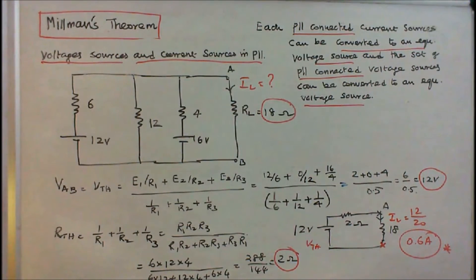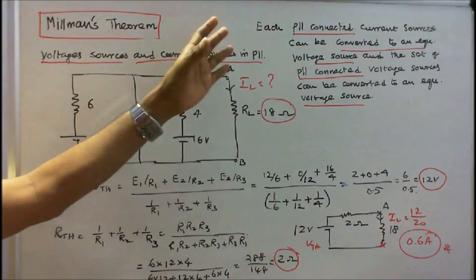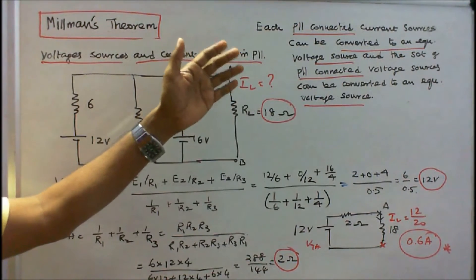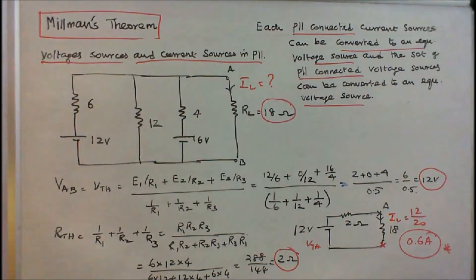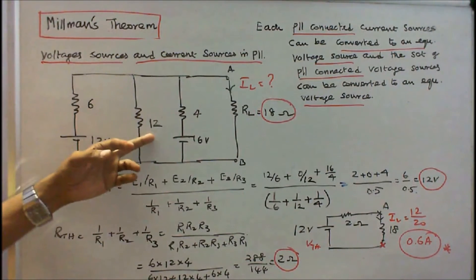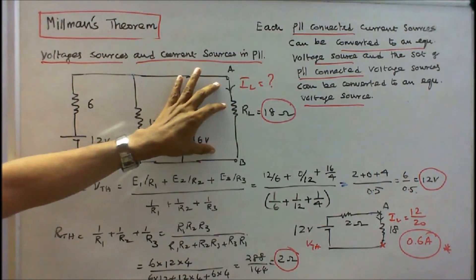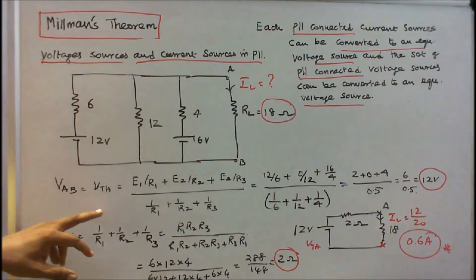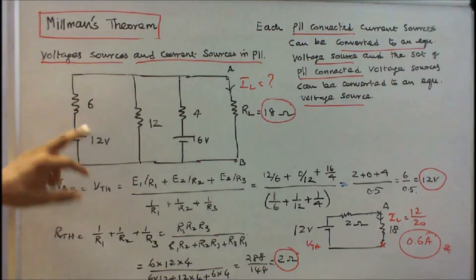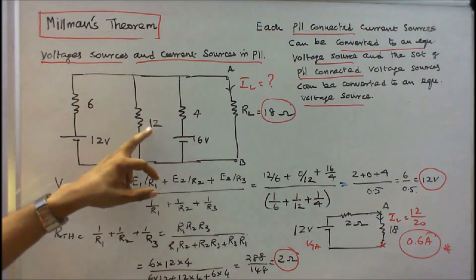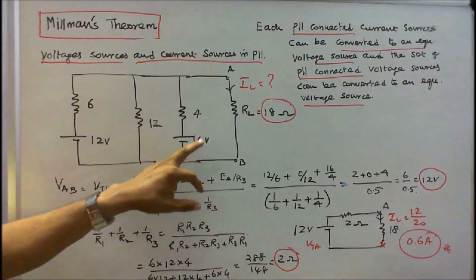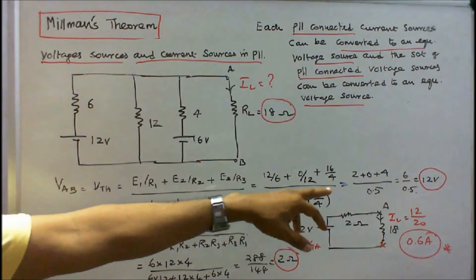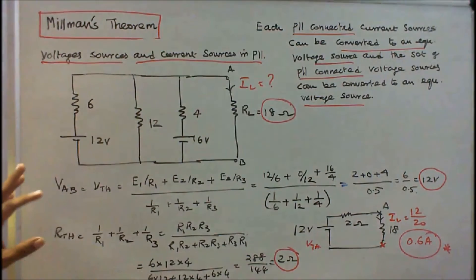Voltage sources and current sources in parallel: Each parallel-connected current source can be converted to an equivalent voltage source, and the set of parallel-connected voltage sources can be converted to a single equivalent voltage source. The circuit has 12 Volts with 6 Ohms, a 12 Ohm resistor, 16 Volts with 4 Ohms. We find the Thevenin voltage V_AB: (E1/R1 + E2/R2 + E3/R3) = (12/6 + 0/12 + 16/4) = 2 + 0 + 4 = 6. Divided by (1/6 + 1/12 + 1/4) = 0.5. Therefore Thevenin voltage equals 12 Volts.